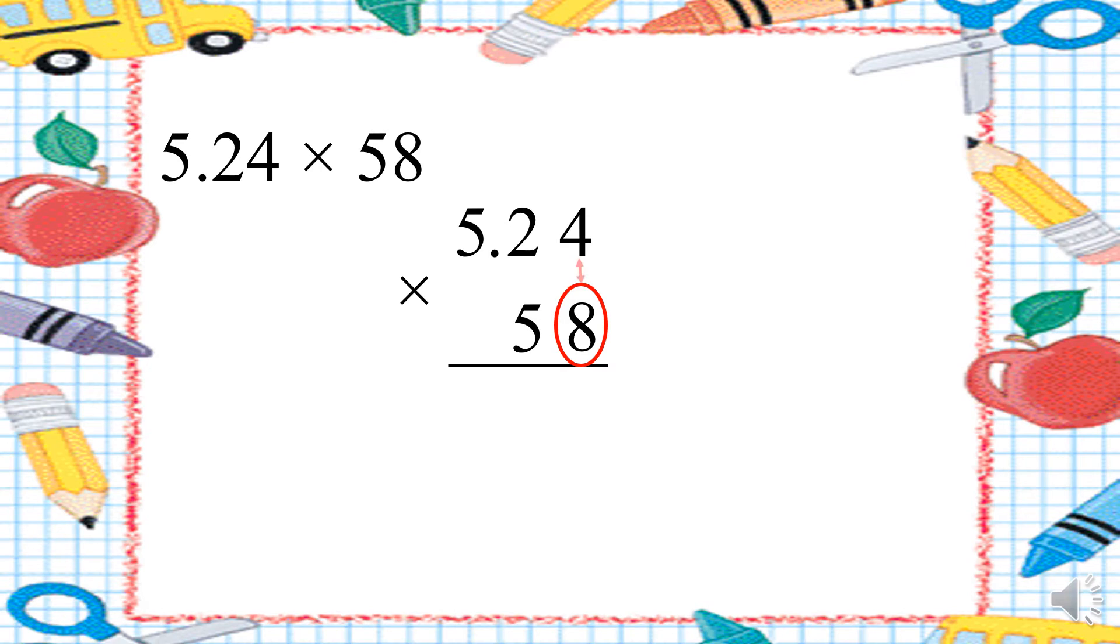8 times 4. 32. 2 down and 3 up. 8 times 2. 16 plus 3. 19. 9 down and 1 up. 8 times 5. 40 plus 1. 41. I will write it all down because I have finished from the digits. Now I will cross the 8 and the carry on related to it. And directly I will put 0 under the 1's digit.